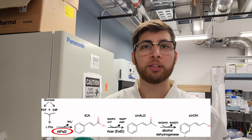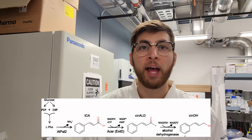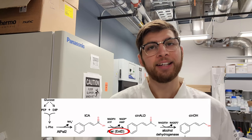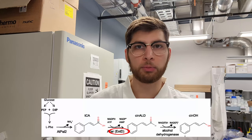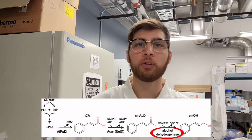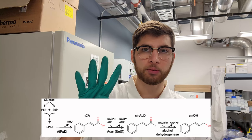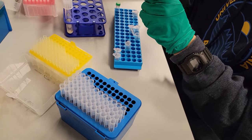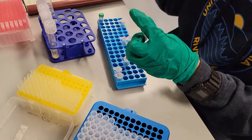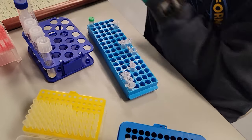The first gene, AtPAL2, is from a tiny flowering plant called Arabidopsis thaliana. ACAR is from a bacterium in the Nocardia genus. EntD is from E. coli, a common lab organism. The final enzymatic step is catalyzed by alcohol dehydrogenase, a very ubiquitous enzyme found in most organisms. So there are four enzymatic steps, but we only need to integrate three genes. We can find the sequences of these genes for free online, adapt them for our organism, order them to be printed, put them in plasmids, and use the CRISPR-Cas9 system to integrate them into the yeast genome.